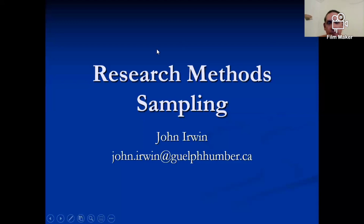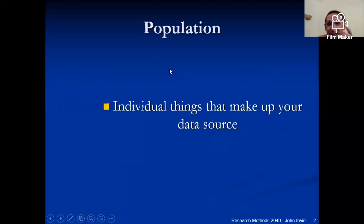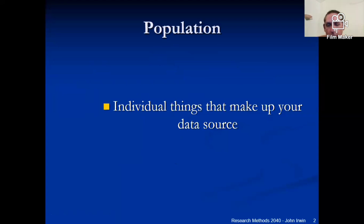Here's my quick thought on sampling as you get into this. There are three key terms you have to know in sampling. The first is population. How did you identify your population? What's the total number of possible things to select from?